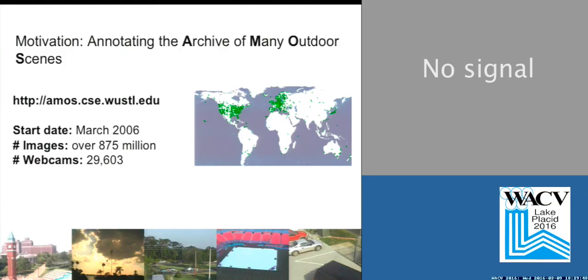What initially interested me in this is that we have a really large dataset — an archive of many outdoor scenes that we've been collecting images from webcams all around the world since March of 2006. We have over 875 million images now, and it would be really nice to have ways to quickly process it so that we can index it and filter out and ignore images, for example, in bad weather conditions.